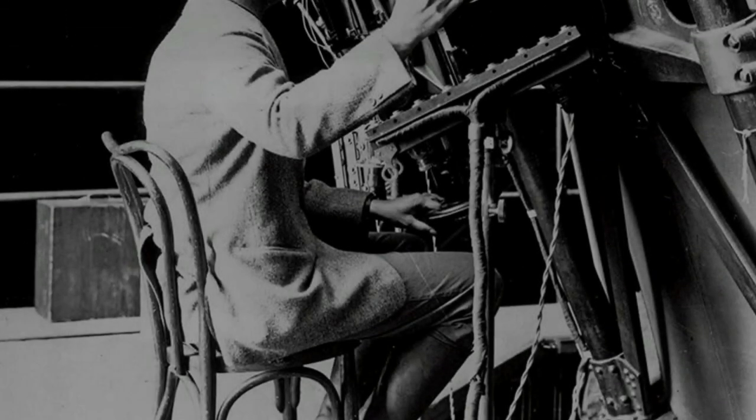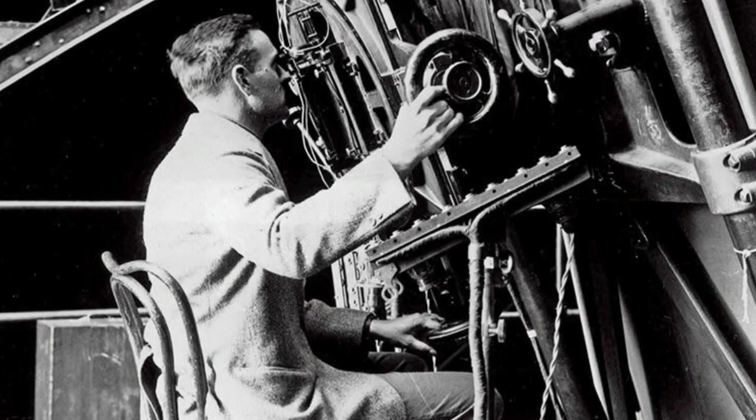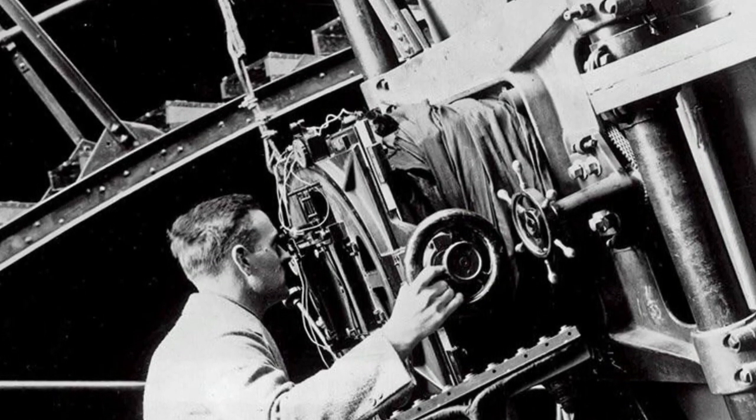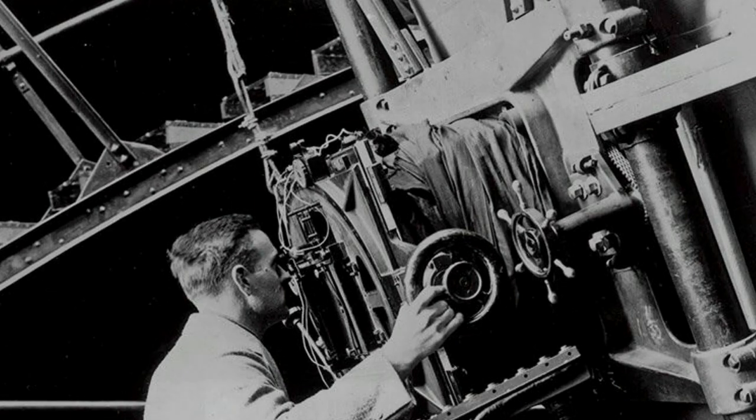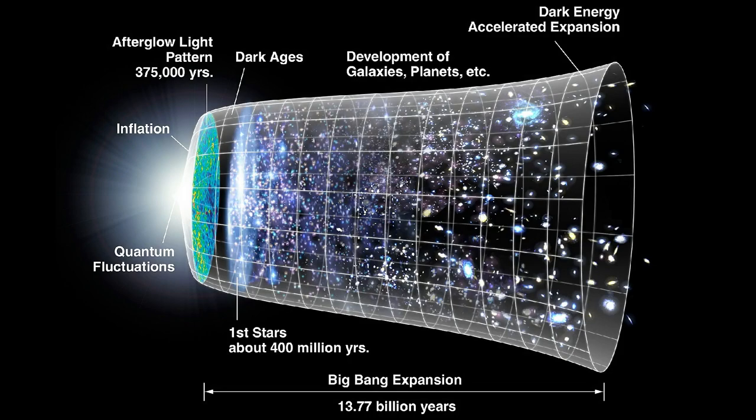But observations by Vesto Slipher and later by Edwin Hubble and Milton Humason suggested the universe was not static, but dynamic. In 1922, Alexander Friedman showed that the equations of general relativity could account for and describe an expanding universe. In a final blow, Arthur Eddington — who ironically proved Einstein right in 1919 by performing the first test of general relativity — proved Einstein's static cosmological model wrong in 1930. Eddington showed that a static universe is unstable and therefore could not be eternal.